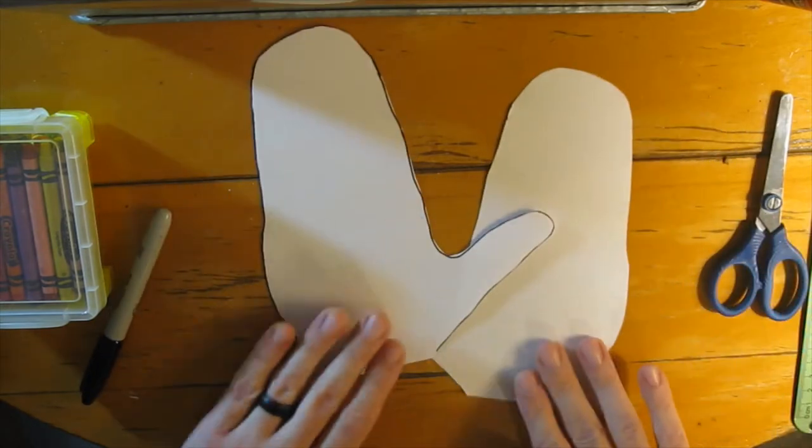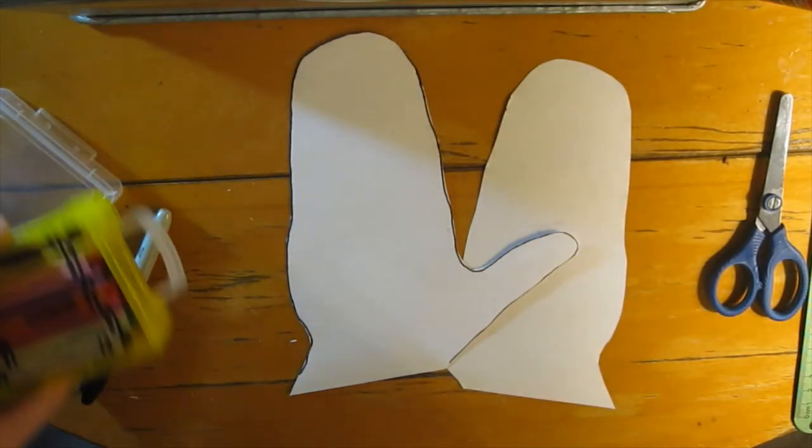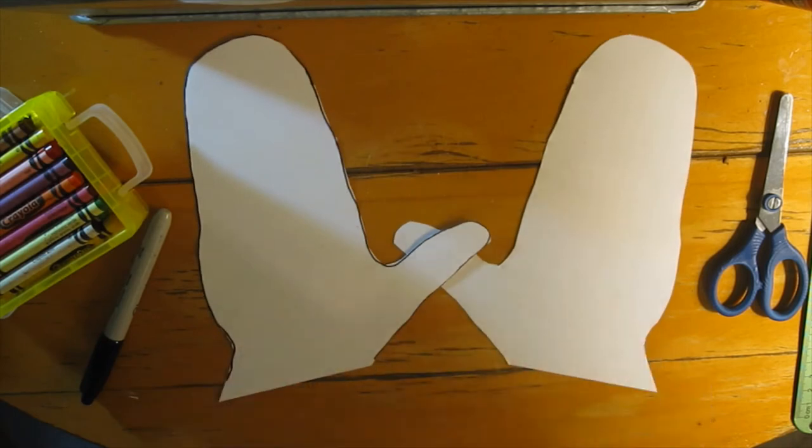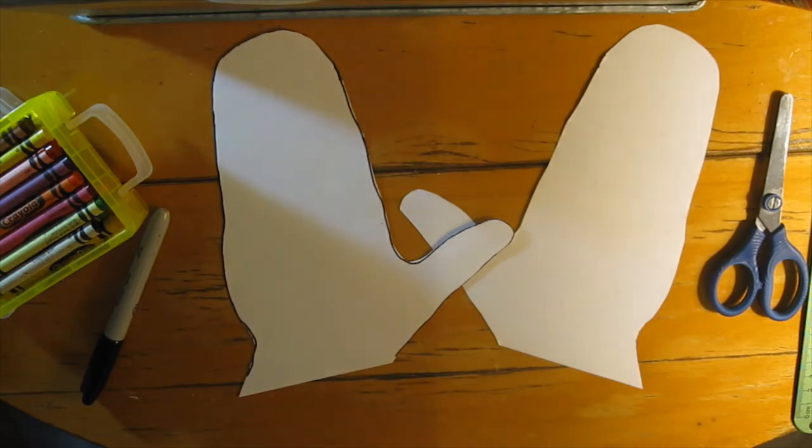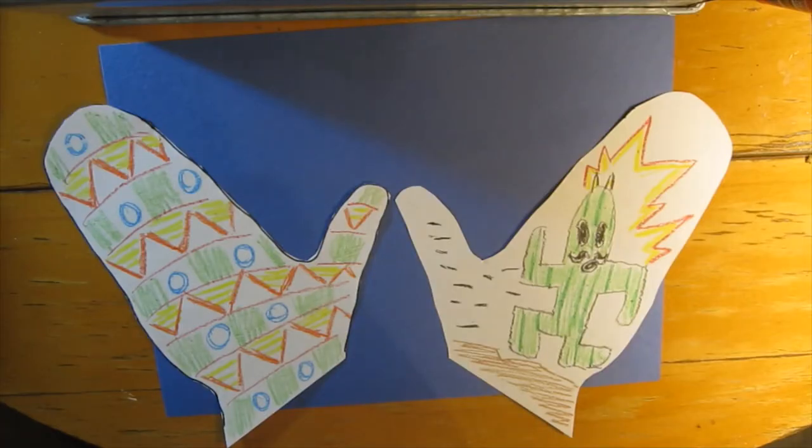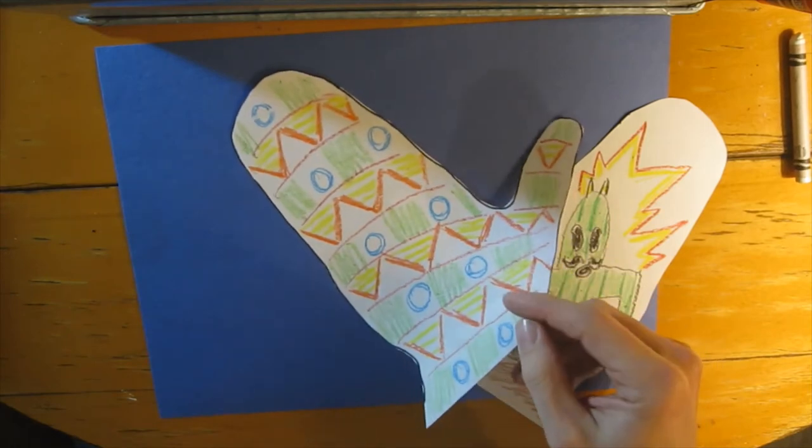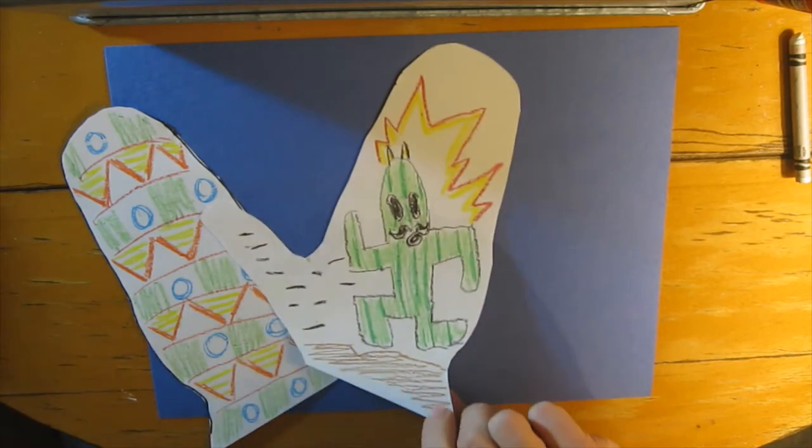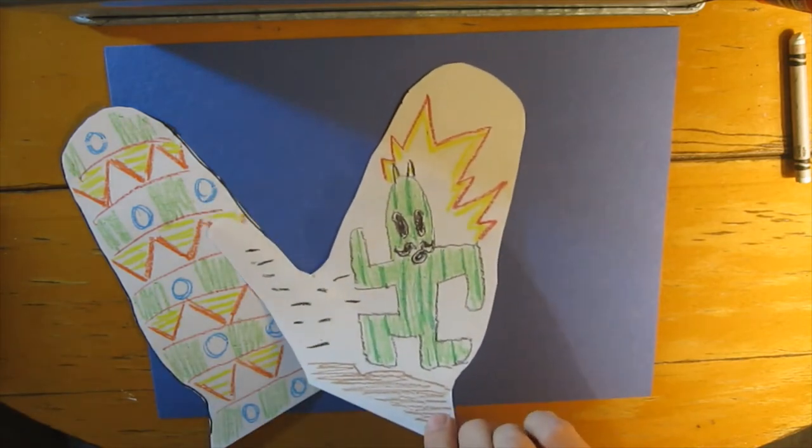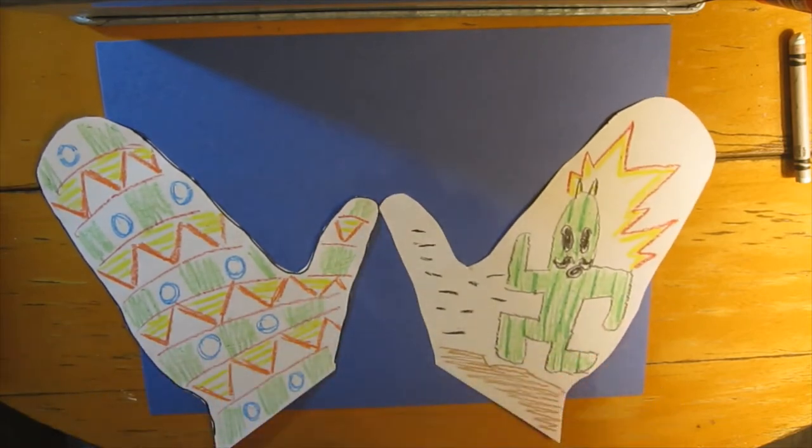The next job for you is you're gonna use your crayons and fill these full of patterns and color. If you want to draw a picture on them, that's fine. Think of what sort of mittens you would like to wear. I've got my mittens all decorated here. I didn't make them match, which is quite alright. On this one I did some different patterns and colors, and on this one I wanted to draw a picture, so I put one of my favorite video game characters, the Jumbo Cactuar from Final Fantasy.